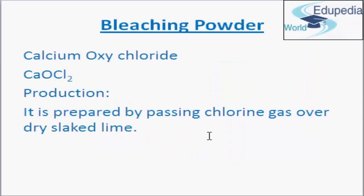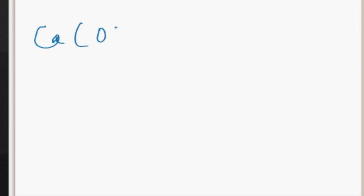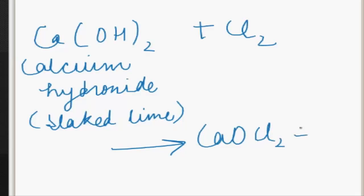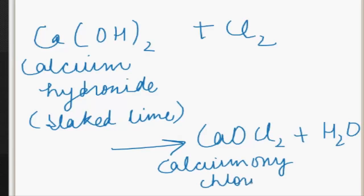Now we will discuss about bleaching powder. The chemical name of bleaching powder is calcium oxychloride, and its chemical formula is CaOCl2. Bleaching powder is prepared by passing chlorine gas over dry slaked lime. The chemical reaction is: Ca(OH)2 (calcium hydroxide or slaked lime) when it reacts with chlorine, it produces CaOCl2 (calcium oxychloride) along with water. This is bleaching powder.